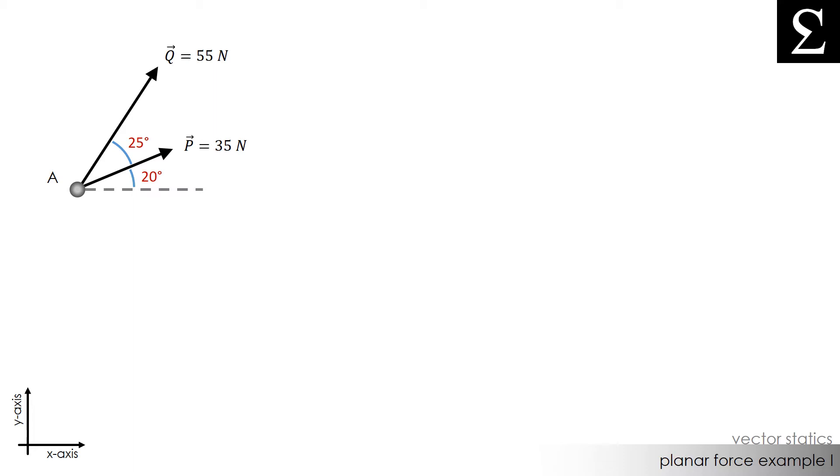The first thing we can do is use the triangle rule to find the magnitude of the resultant vector, which I will call vector R. Remember, vector addition allows us to draw vectors in a tail-to-tip fashion to find the resultant.